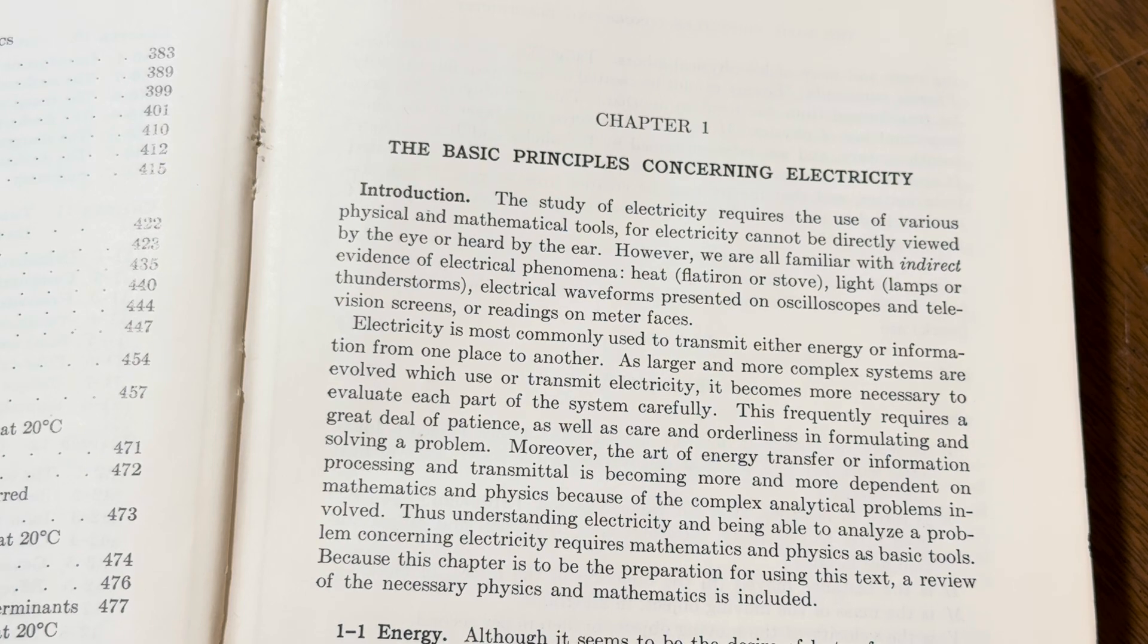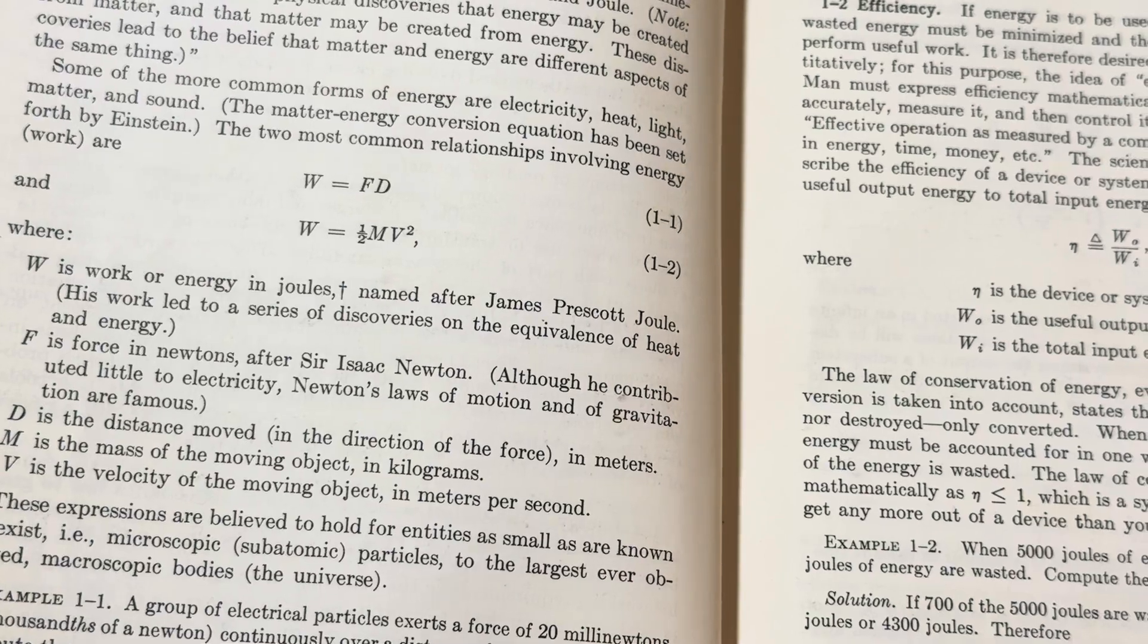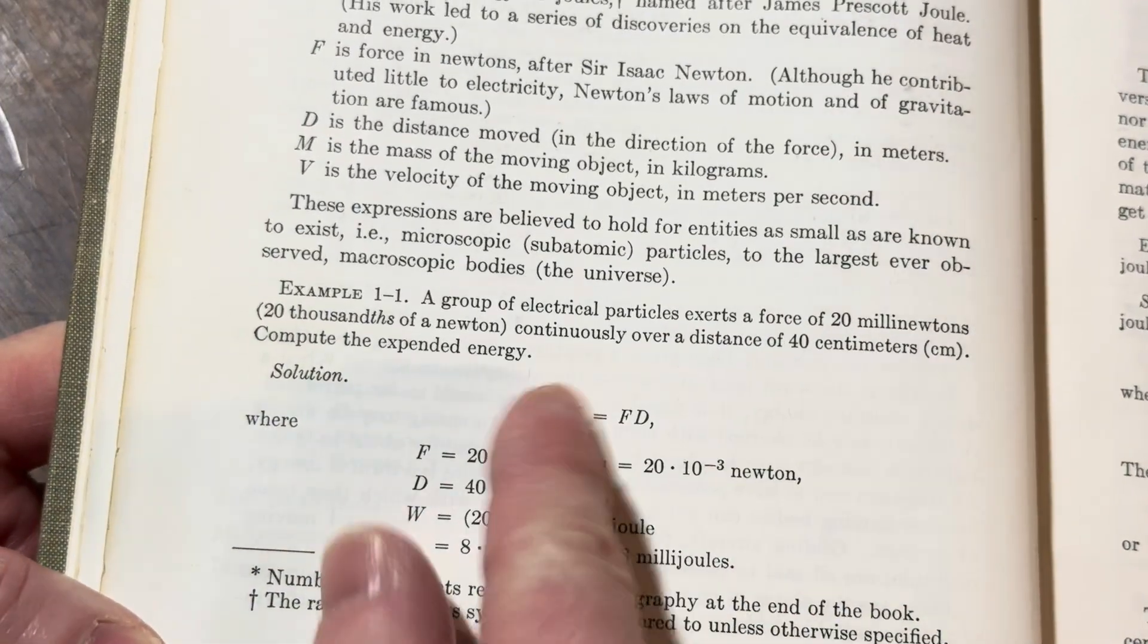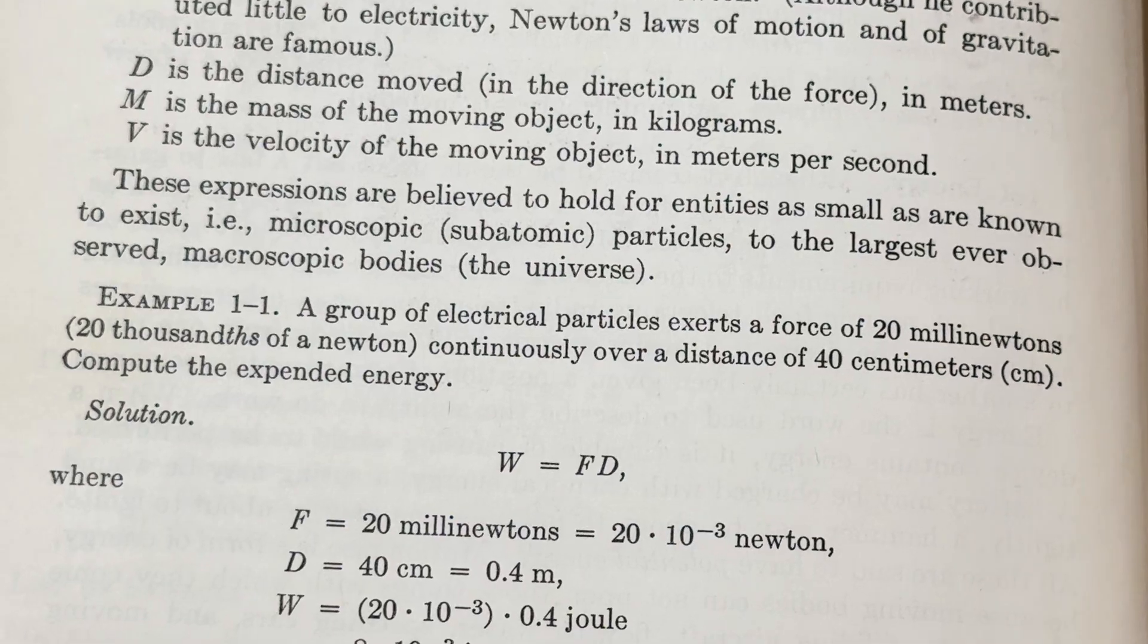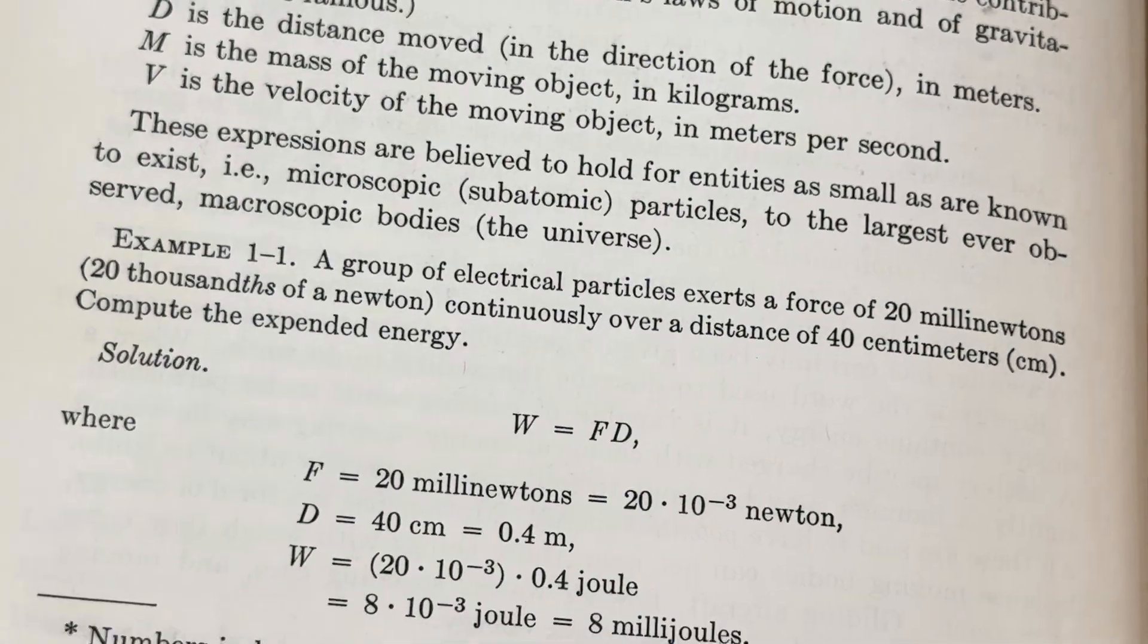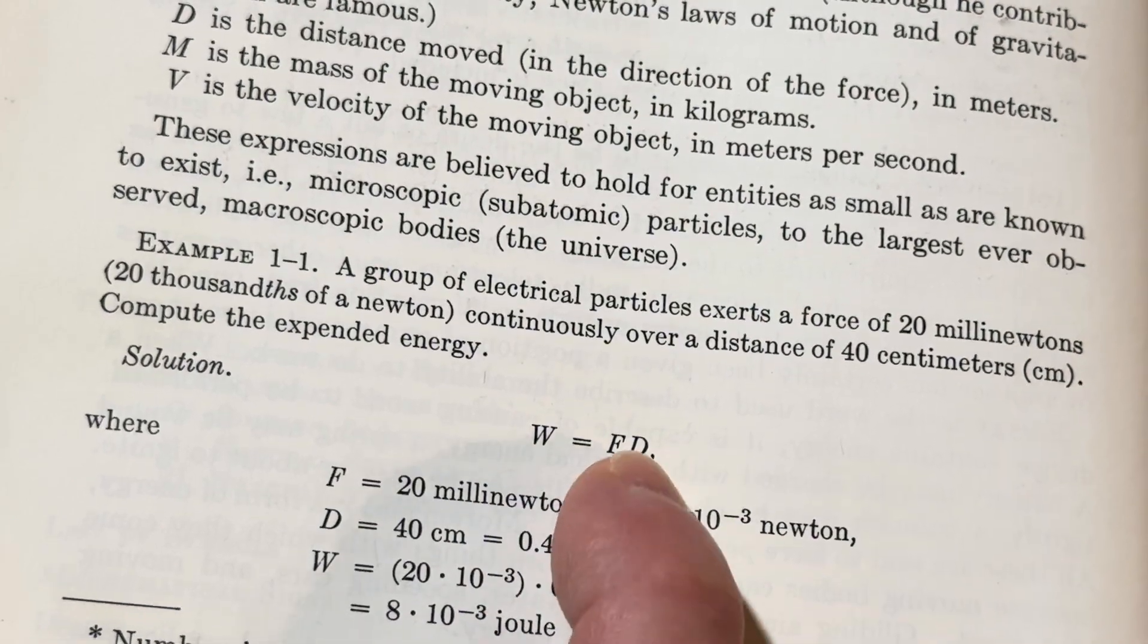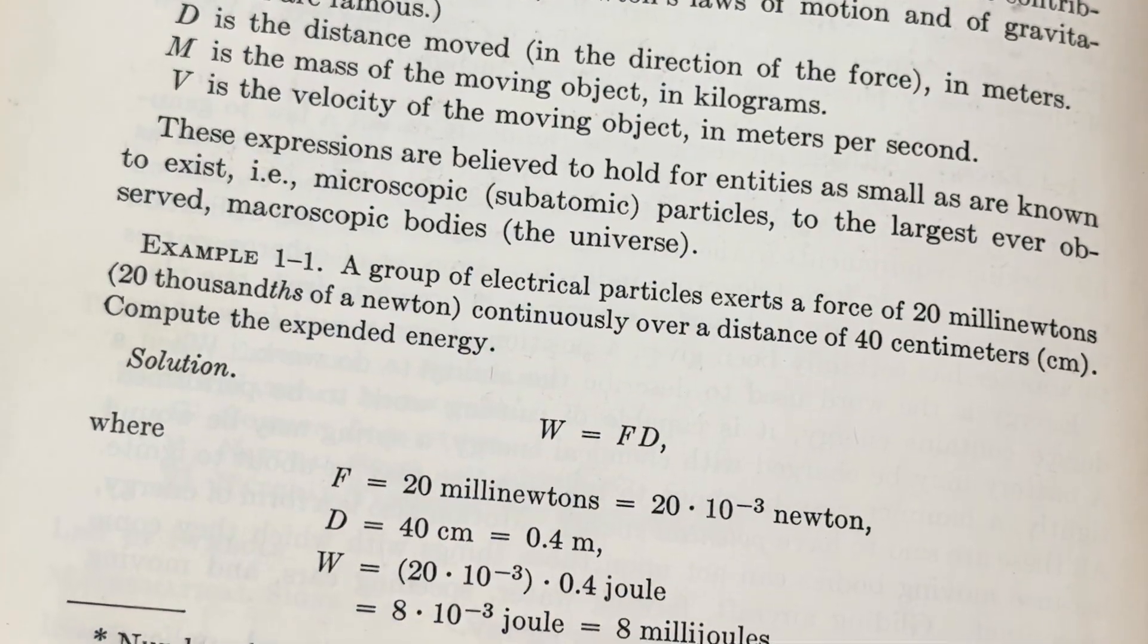Electricity is most commonly used to transmit either energy or information from one place to another. So it's an introductory book. You can use this as a beginner. You see here as an example. Let's look at this example. A group of electrical particles exerts a force of 20 million newtons, 20 thousandths of a newton, continuously over a distance of 40 centimeters. Compute the expended energy. So here you have work. Work is force times distance. So there's your distance D. There's your force. Then you can compute the work.